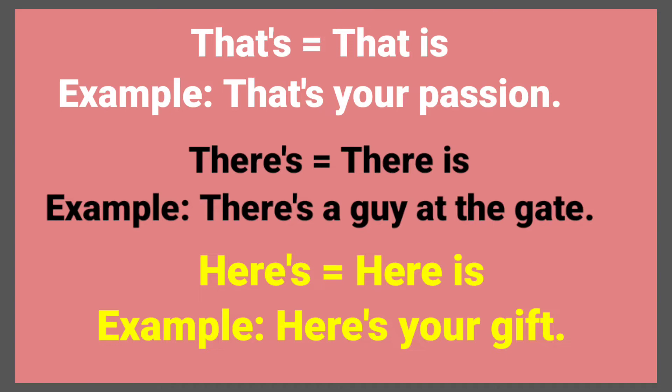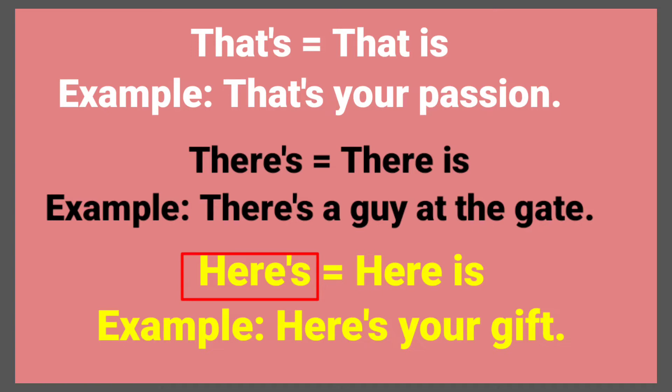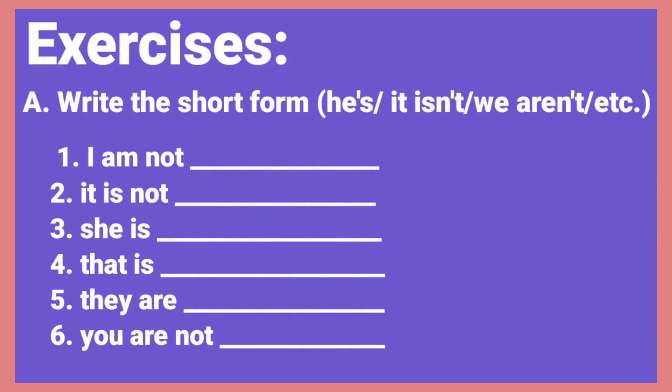There's — T-H-E-R-E apostrophe S — is the same as there is. For example: There's a guy at the gate. Here's — H-E-R-E apostrophe S — is the same as here is. For example: Here's your gift.